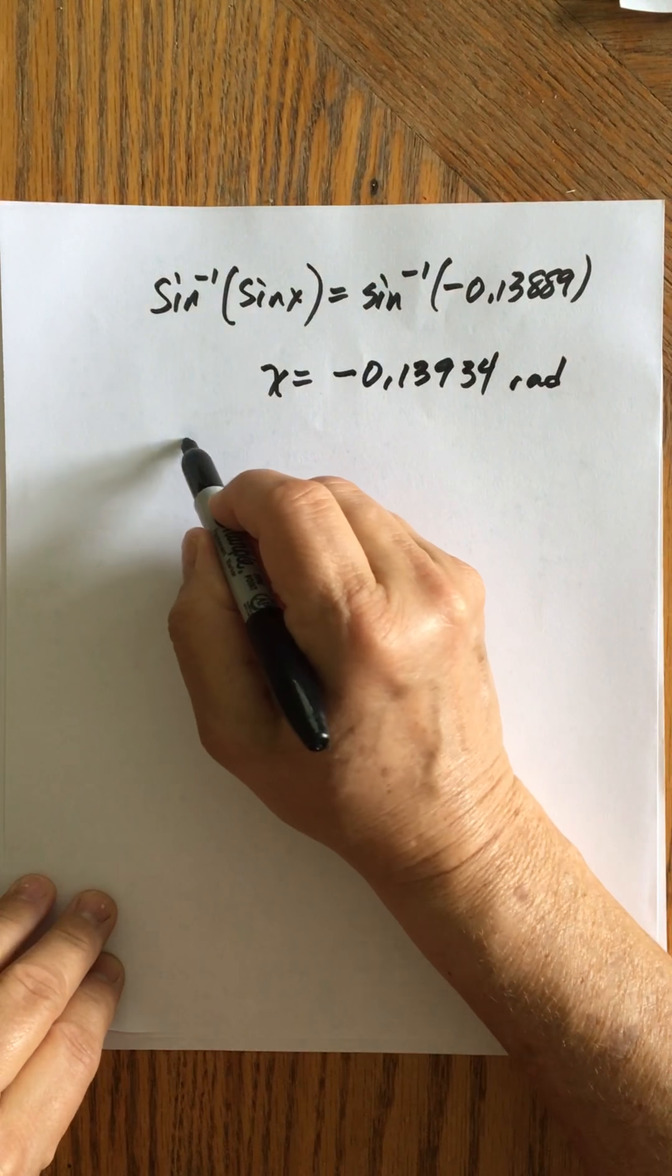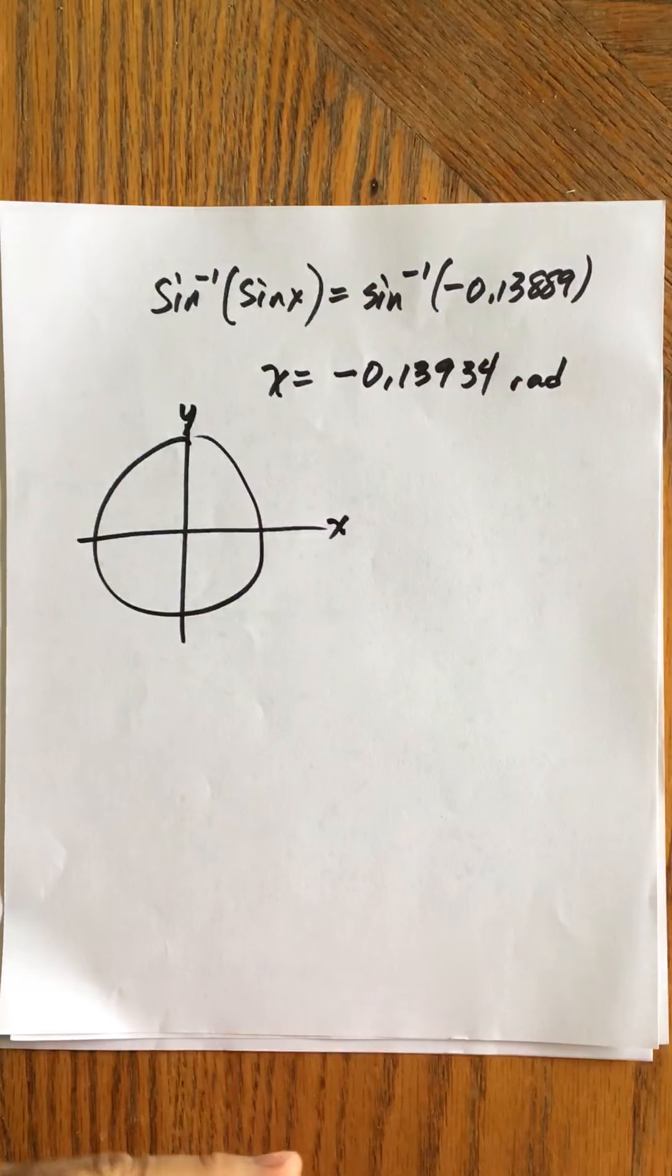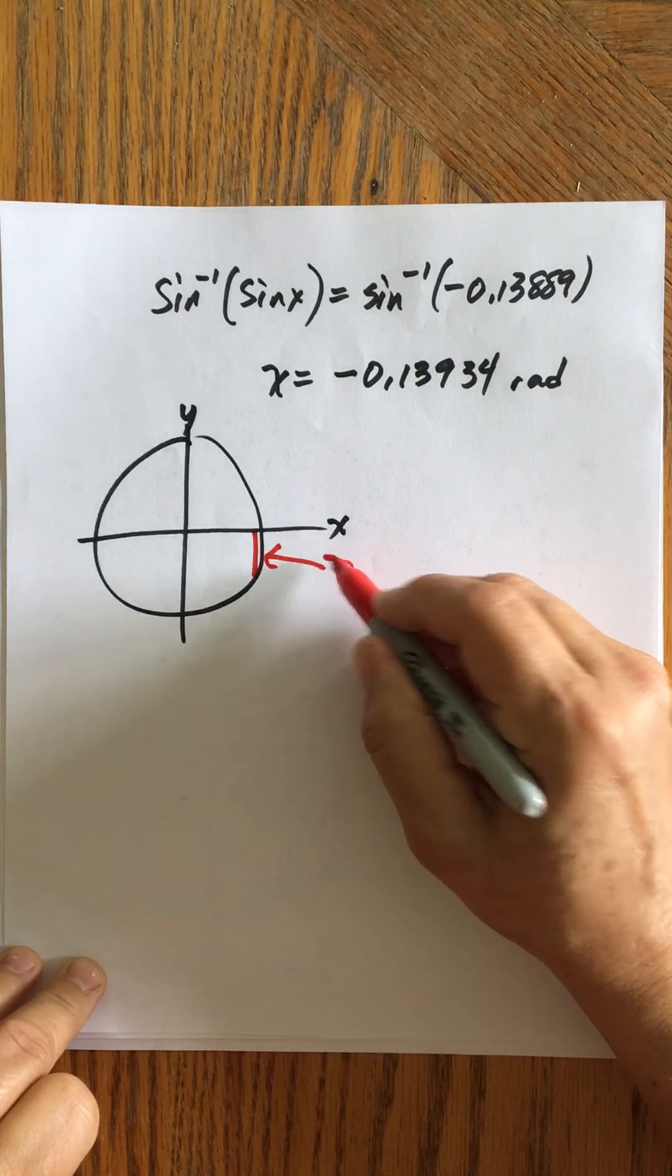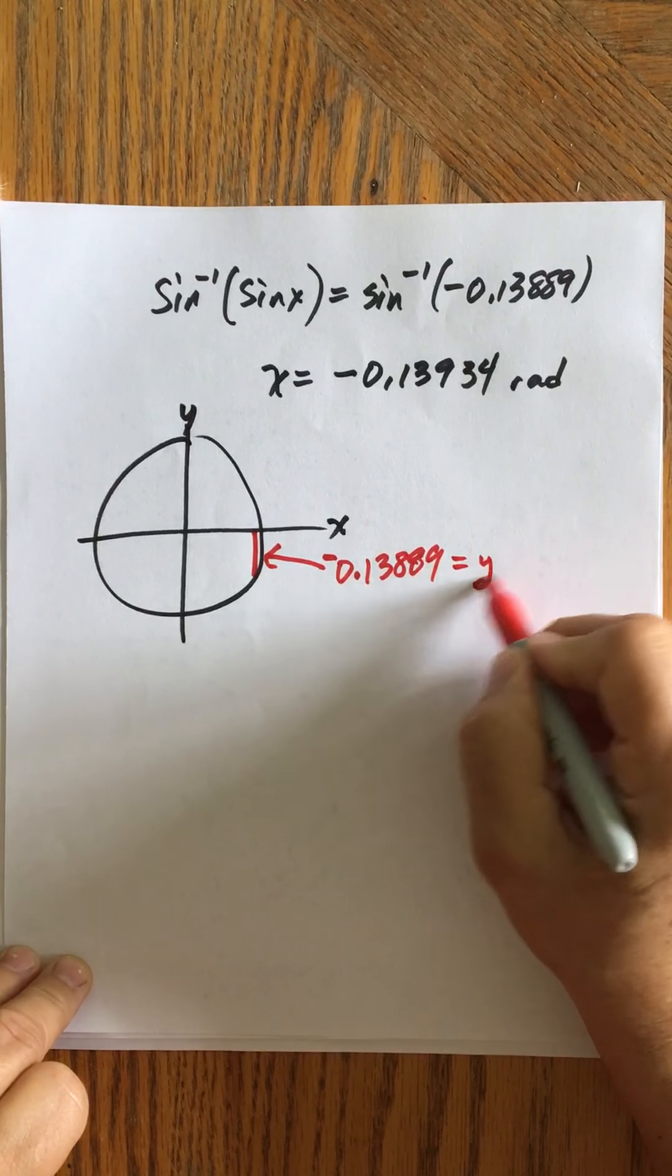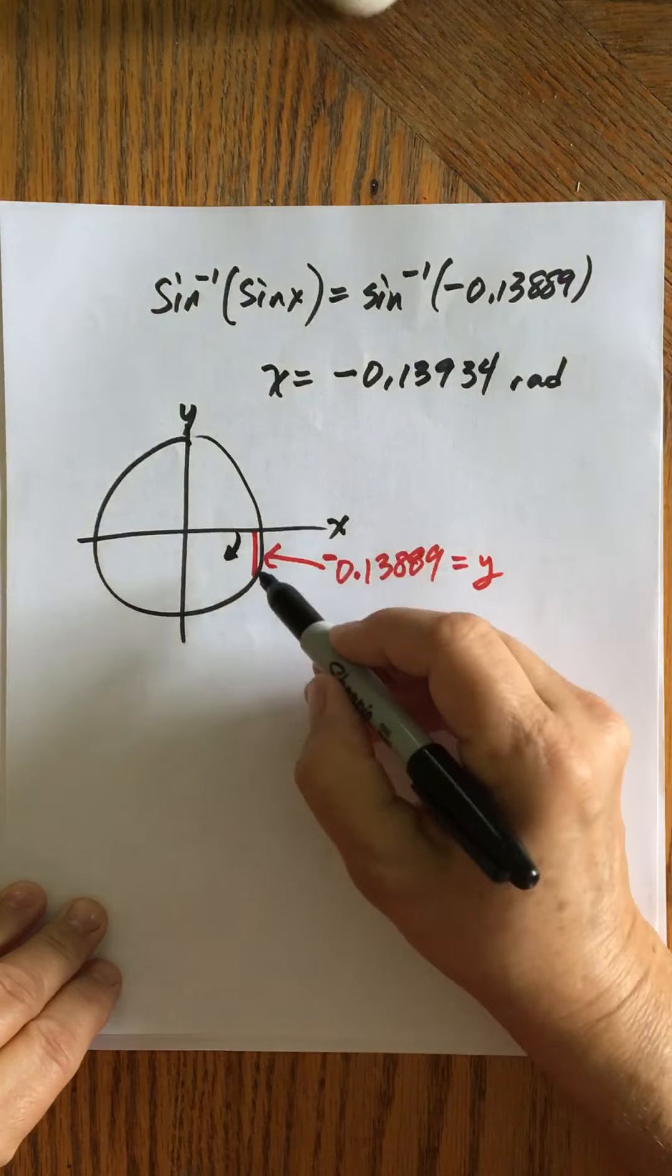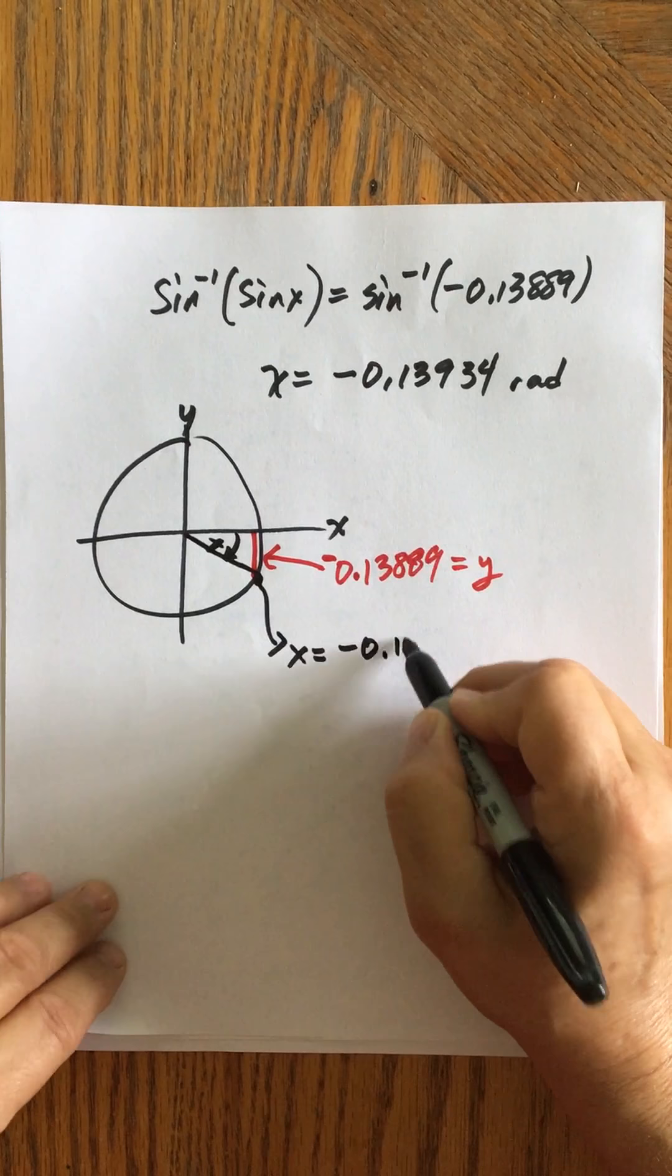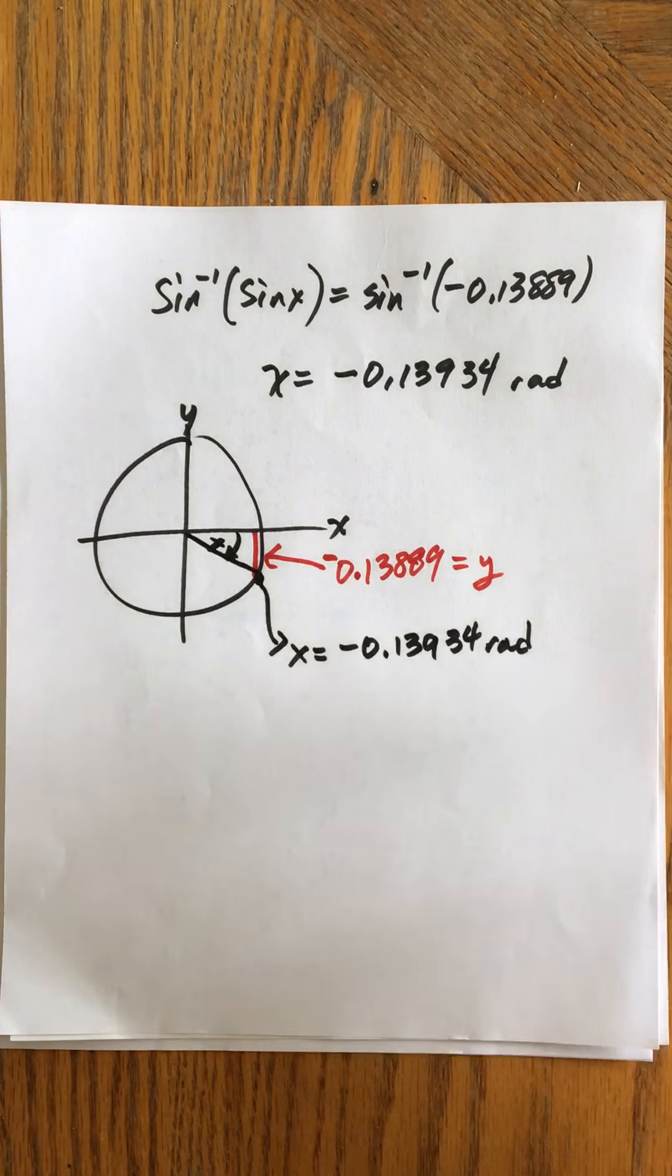Now, so visually what that is, I have a unit circle, right, and a coordinate axis. And essentially, the question I asked was, for what angle rotation is the y-coordinate equal to a length of, oh, I'm going to have some help from my cat, negative 0.13889, right? And that's where the y-coordinate is that length. And what the calculator returned to me is that the angle for that is the angle x that I'm looking for here. This is right here, right? And that x was, and that's an angle, negative 0.13934 radians. All right, so that's what that question meant, and that's what this physically represents.